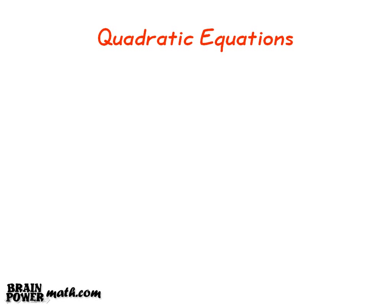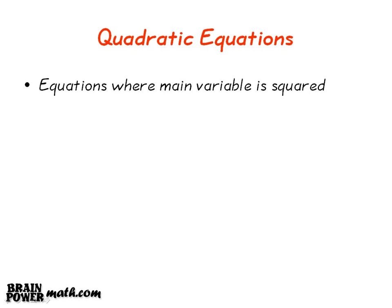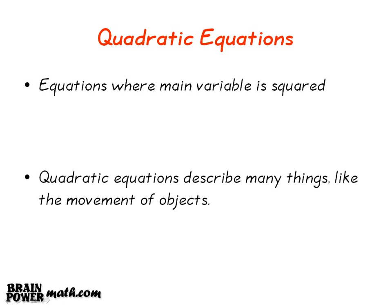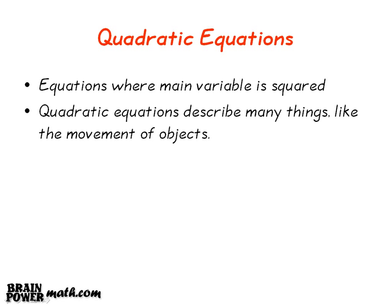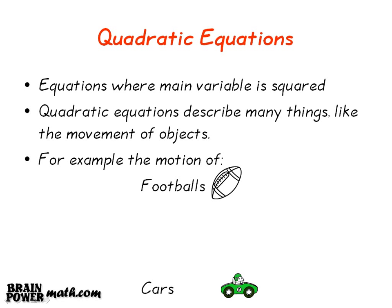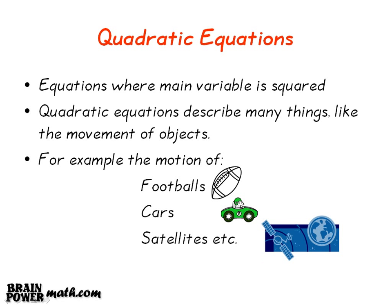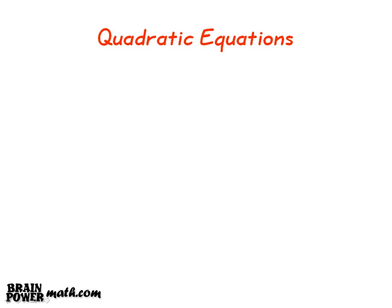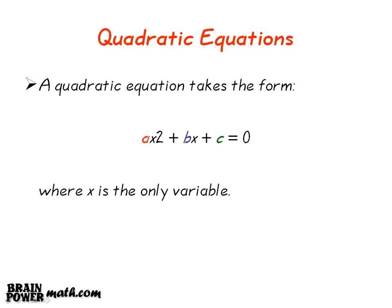We will now look at the area of quadratic equations. Quadratic equations are equations where the main variable is squared. They are used to describe many things, like the movement of objects in space — for example, the motion of footballs, cars, satellites, and so on. A quadratic equation takes the form ax squared plus bx plus c is equal to 0, where x is the only variable.